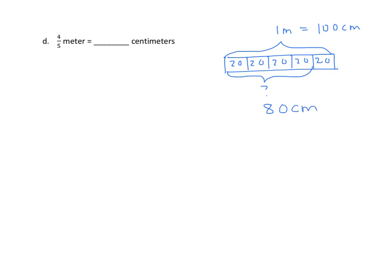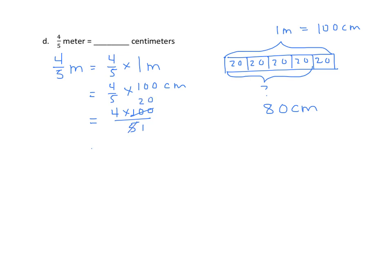Let's use the mathematical procedure. Four-fifths meter equals four-fifths times one meter. We substitute centimeters for meters: one meter equals one hundred centimeters. Now solving, both five and one hundred are divisible by five — one hundred divided by five is twenty, five divided by five is one — and the answer is eighty centimeters.